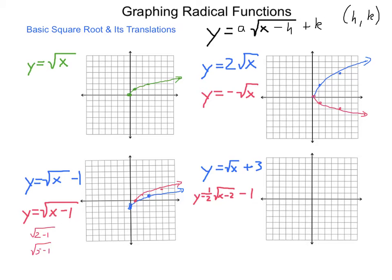So all that the adding or subtracting does — whether it's inside the radicand for horizontal movement or outside the radicand for vertical movement — is change our starting point of the graph. With these, we have to restrict our domains. We cannot substitute in any value for x that we want. We have to make it so that the lowest value inside the radicand is 0 and then move out from there.